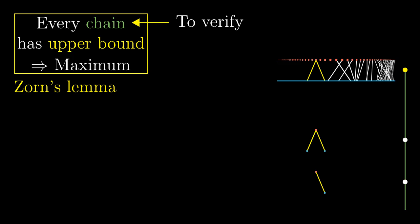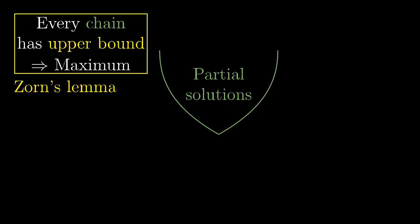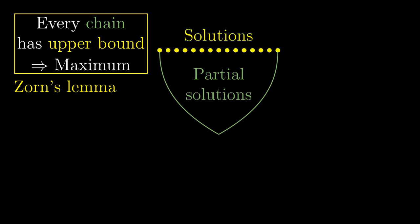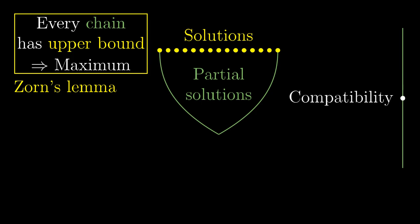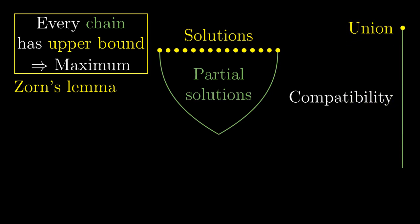Actually, almost every usage of Zorn's lemma looks this way. In general, we consider the set of all partial solutions to our problem, so that the full solutions are the maximal elements. We verify the chain condition by realizing that the union of any two solutions in a chain is still a solution, and that this is sufficient to prove that the union of any chain is still a partial solution.